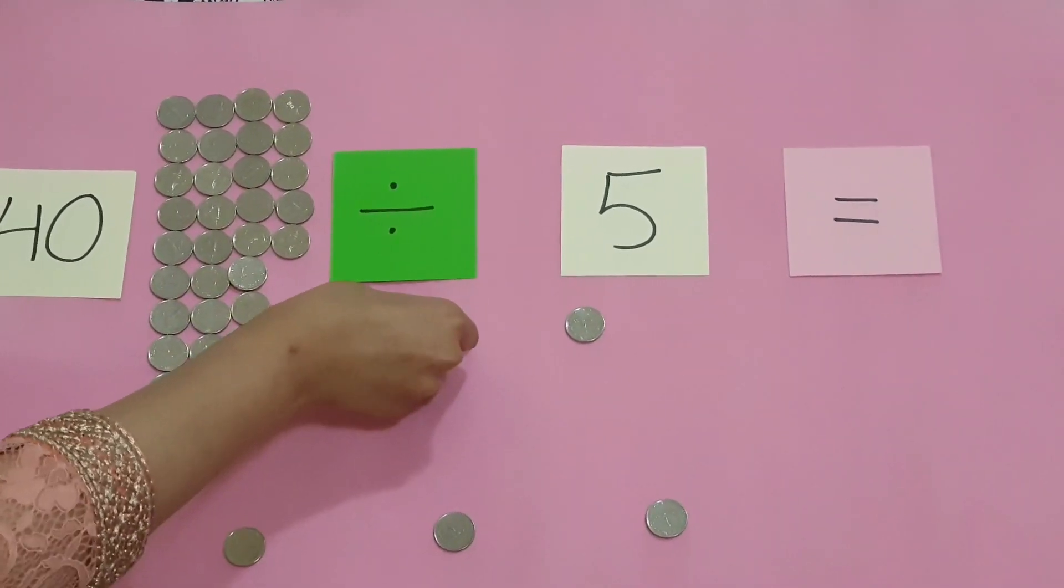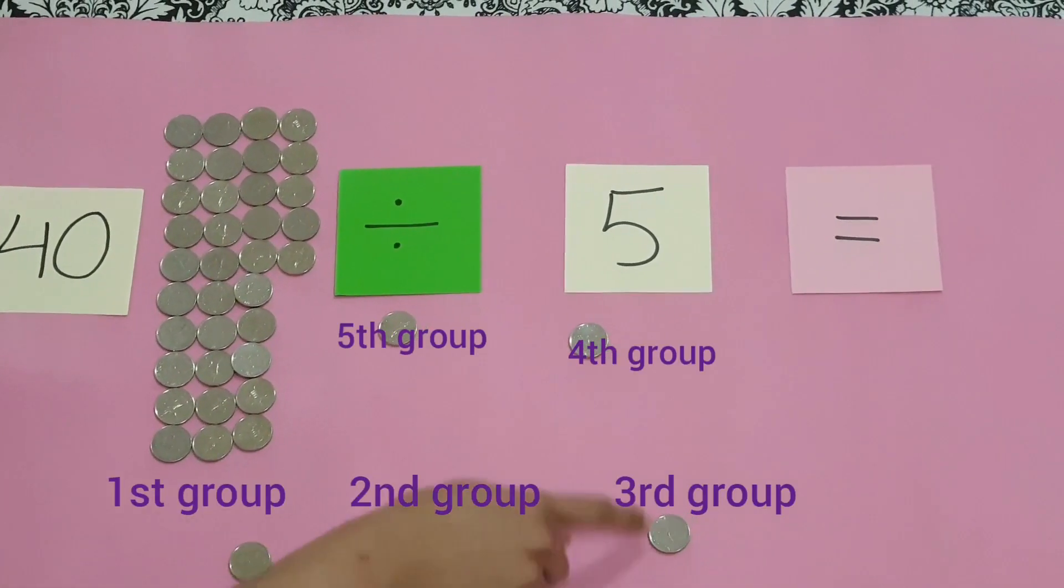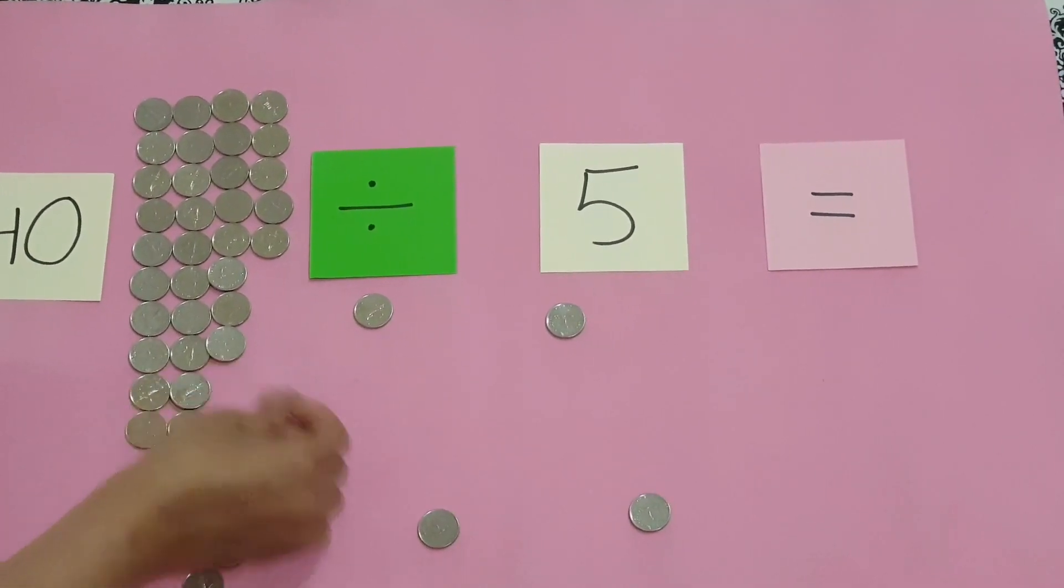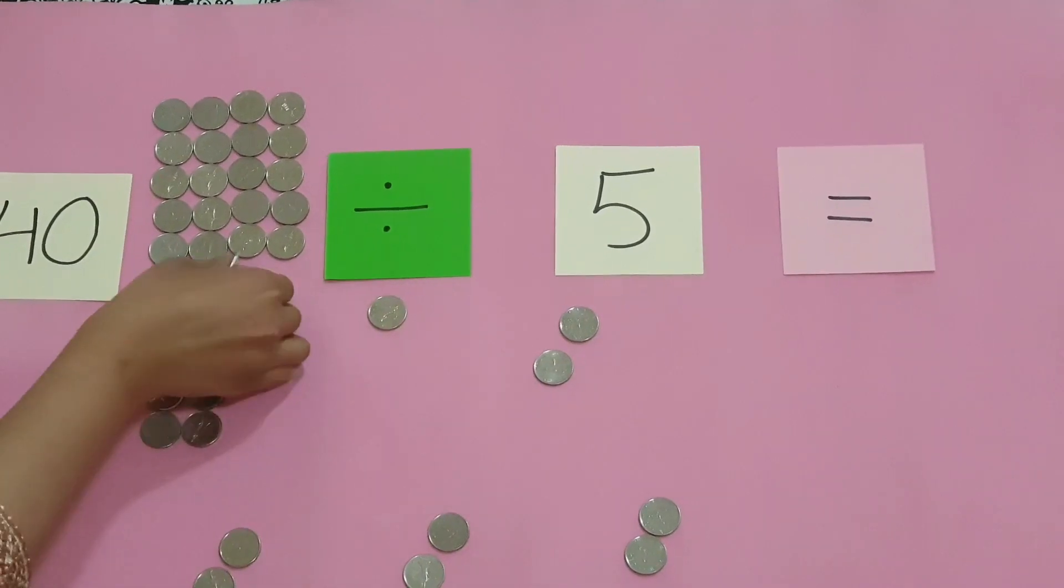Fifth coin here. Okay, so now these are our five groups - one, two, three, four, five. I'm going to put all the coins in them one by one to see how many coins will be in each group.